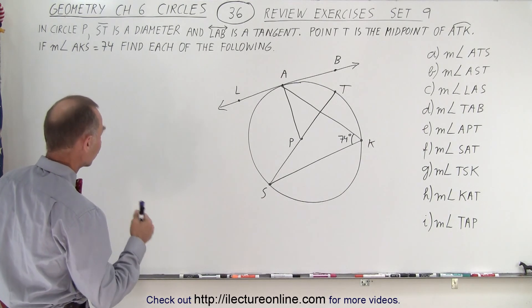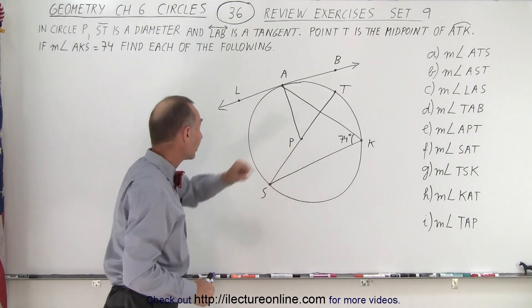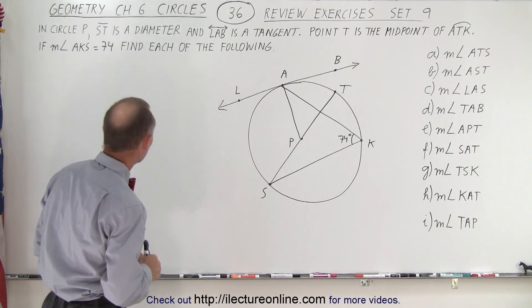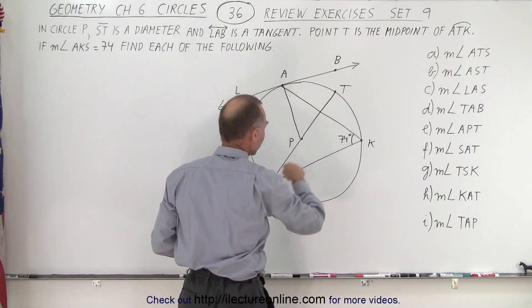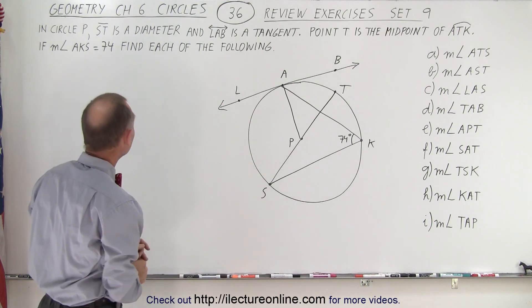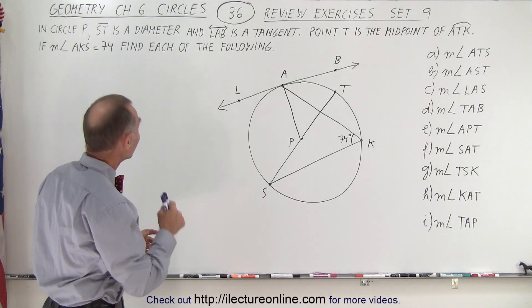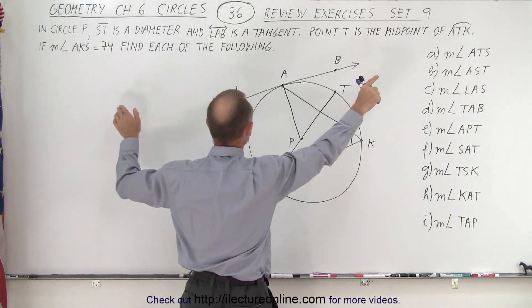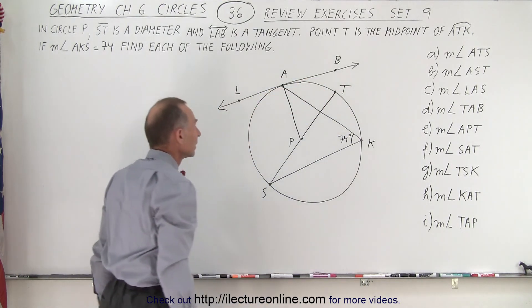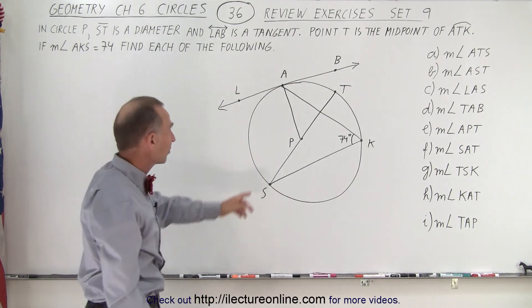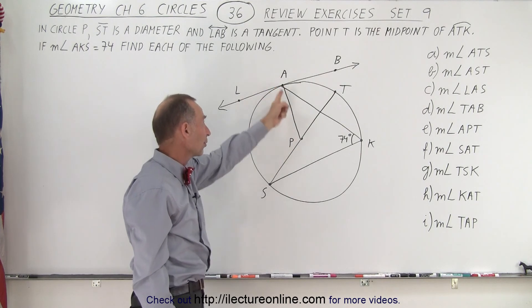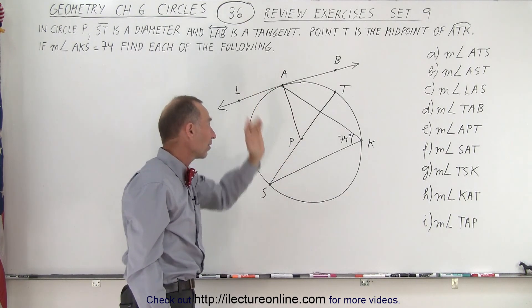The problem says we have a circle P. ST is the diameter — from S to T it passes through the center of the circle, so it must be the diameter. The line from L to A to B goes on infinitely in both directions; that is tangent at point A. A tangent line by necessity means that a line drawn from the center of the circle to that point forms a 90-degree angle on both sides.